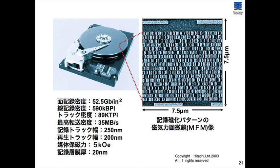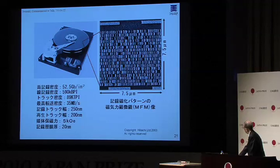The recorded pattern from that Hitachi presentation showed an areal recording density of 52.5 Gbit/in² and a linear density of 590 kbit/in. This breakthrough gave perpendicular recording a second life.